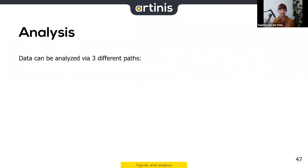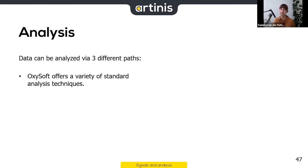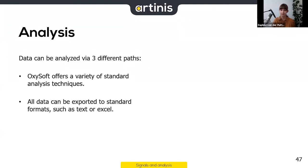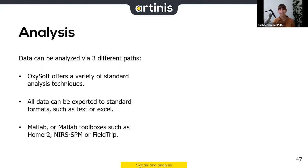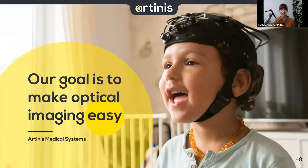Finally, let's talk about analysis options for fNIRS. There are three main paths. First, OxySoft — our software — offers standard analysis techniques: applying filters, calculating averages, standard deviation, minimum and maximum values, and standard statistics. Second, you can export to many different formats including text or Excel. Third — and most used — we developed a tool to convert OxySoft data so you can use free MATLAB toolboxes such as Homer, NIRS-SPM, or FieldTrip.